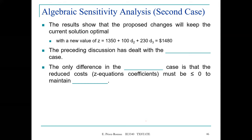The preceding discussion has dealt with the maximization case. The only difference in the minimization case is that the reduced costs in the Z-equation must be less than or equal to zero to maintain optimality.